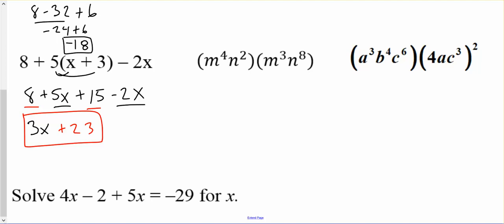Our next one: simplifying again. We have m to the 4th and m to the 3rd. When we're multiplying with the same base, we add our exponents, so that's going to make m to the 7th. n squared and n to the 8th will make n to the 10th.